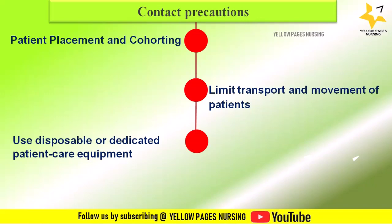Patient placement and cohorting includes appropriate placement of patients, such as maintaining adequate distance of separation between patients, and using privacy curtains between patients in cohorting depending on conditions. Limit transport and movement of patients outside of the room to medically necessary purposes. When transport or movement is necessary, cover or contain the infected or colonized areas of the patient's body. Remove and dispose of contaminated PPE and perform hand hygiene prior to transporting patients on contact precautions.